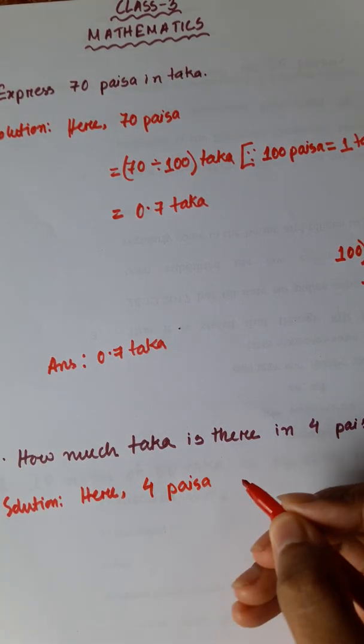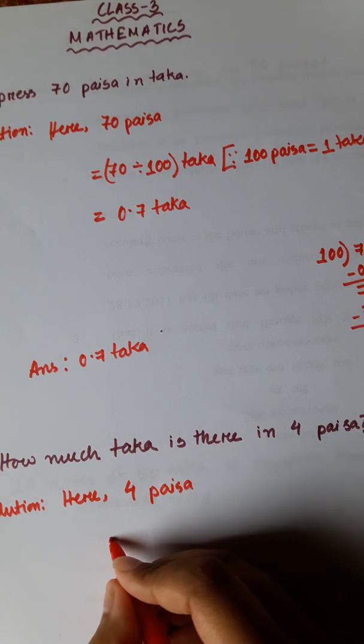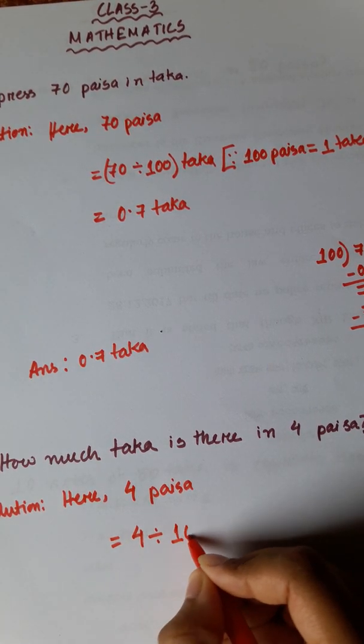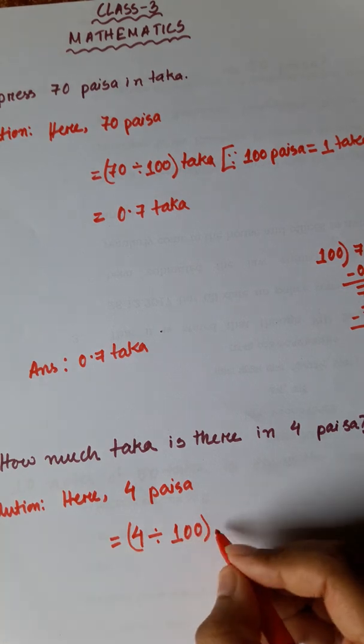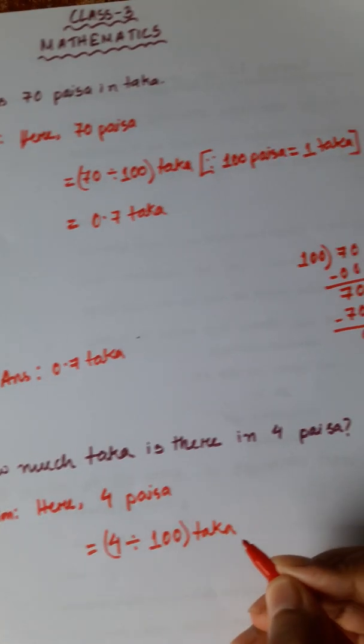4 Paisa because it is given. So 4 is divided by 100 and convert it into Taka. Because